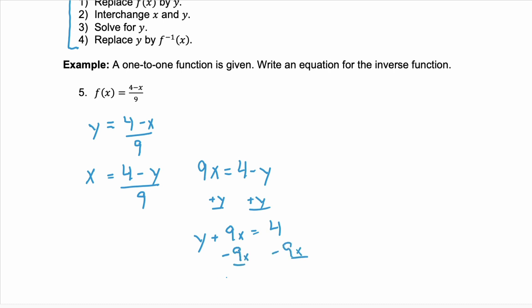So we'll have y plus nine x equals four and then subtract the nine x. And you have, we'll put it here, y equals four minus nine x. And then your last step is just to replace your y with the inverse function notation. So f inverse of x equals four minus nine x.